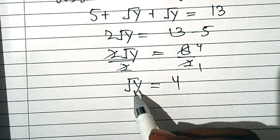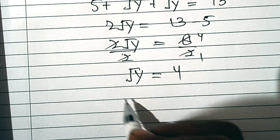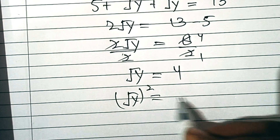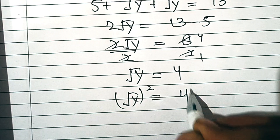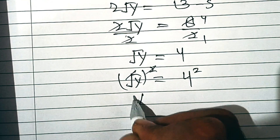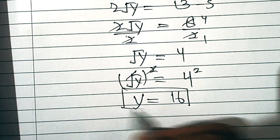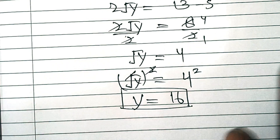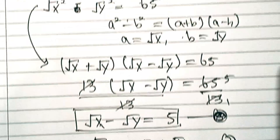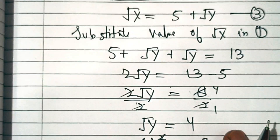To get the value of y, square both sides: (√y)² = 4². The square and square root cancel out, giving y = 16. Now substitute the value of y into Equation 2, which is x − y = 65.